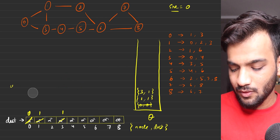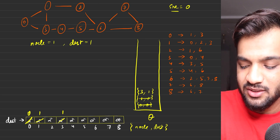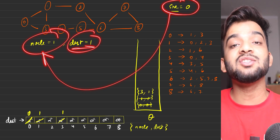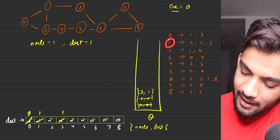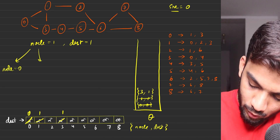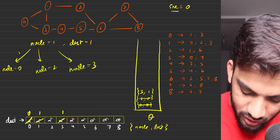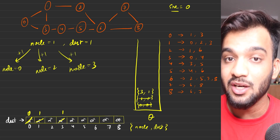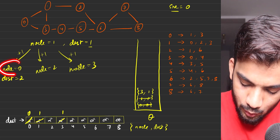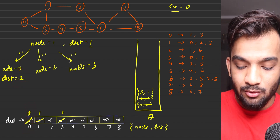Next, we process node one with distance one — meaning it took distance one to reach node one from source. Node one's adjacent nodes are zero, two, and three. Since all edges are unit weight, each neighbor would be reached at distance one plus one, which is two. Node zero has already been reached at distance zero, so we discard it — we always prefer a shorter distance.